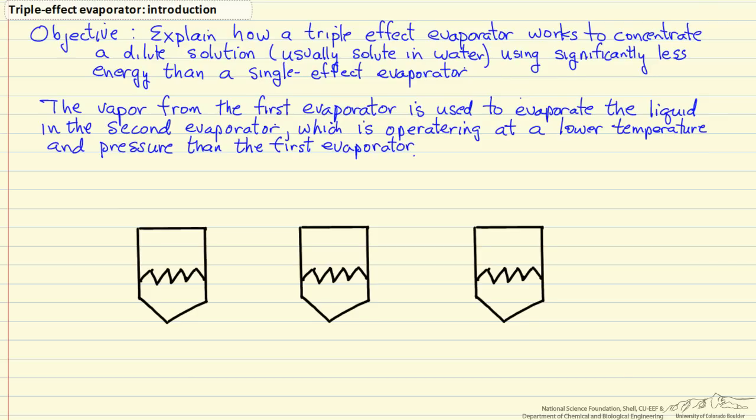The advantage of the triple effect evaporator is that we can use the vapor from the first evaporator as the source of heat for evaporating the liquid in the second evaporator, and then use the vapor from the second evaporator as the source of heat for evaporating the liquid in the third effect. I'll go through in detail to show you what we're referring to here.